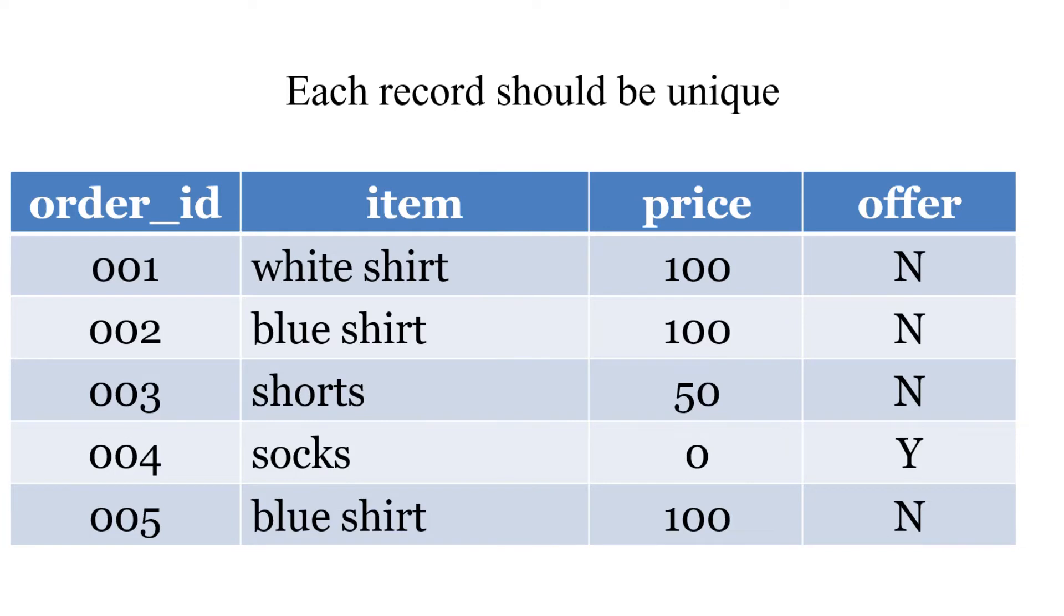Each record should be unique. If we were going to add another blue shirt with the same price and no offer, it wouldn't be unique. So we can add a unique reference, the unique identifier. For example, we've just added order ID, so each row is unique, even though blue shirt is in there twice. That's what we commonly call a primary key.